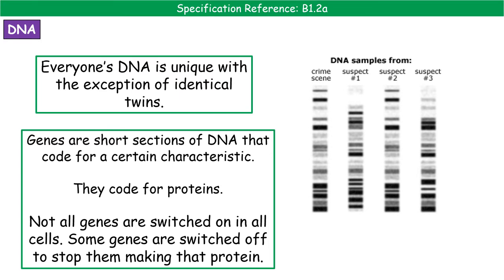Genes are short sections of DNA, and the gene itself codes for a certain characteristic because it codes for a certain protein. If all cells made all proteins, there would be no specialization. Instead, different cells switch on and switch off different genes. Some cells will have certain genes switched on, and in a different cell those same genes would be switched off, meaning we have specialized cells.